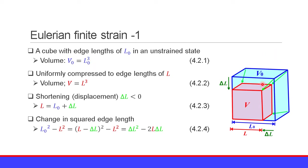We compress this cube uniformly to edge length L. The volume of the compressed cube is V = L cubed. The shortening or displacement of the edge length is delta L, so L equals L0 plus delta L, where delta L is smaller than 0. The change in squared edge length is L0 squared minus L squared, which equals delta L squared minus 2L delta L. Equation 4.2.4.